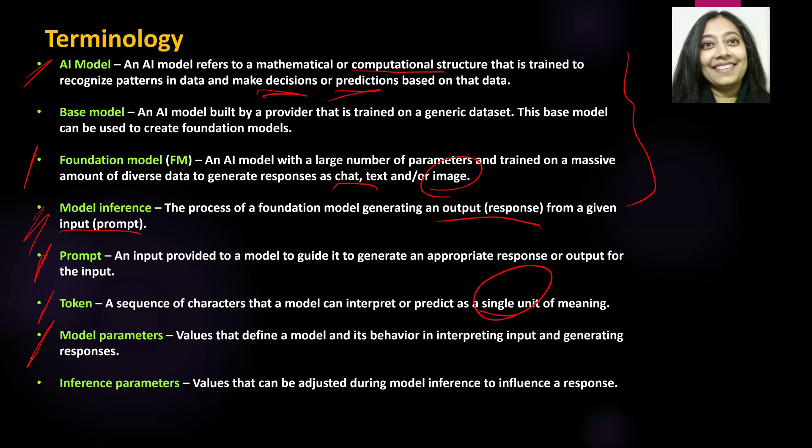Model parameters are different values that define a model and its behavior to interpret an input and generate an output. You can configure and set different model parameters so that input is processed in a specific manner and output is generated correspondingly. Along with model parameters, we also have inference parameters — values that can be adjusted during model inference so that the final output can be influenced in a specific way.